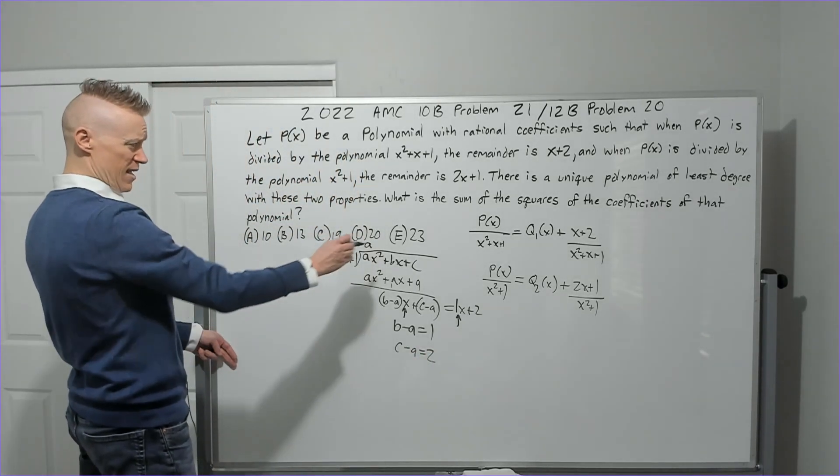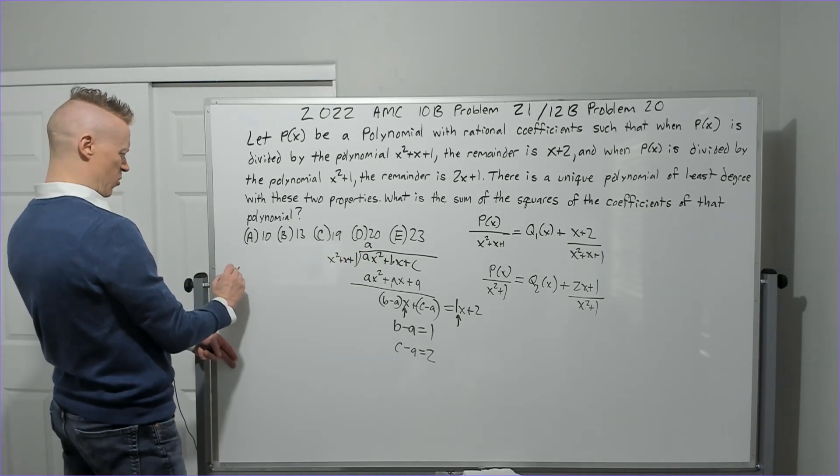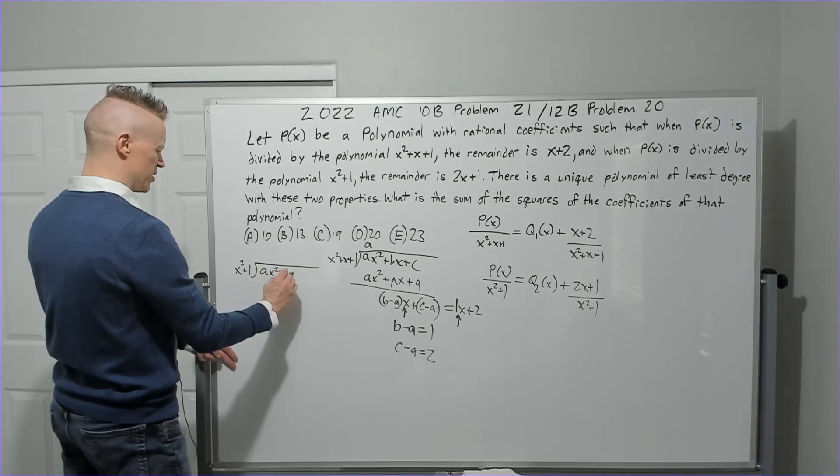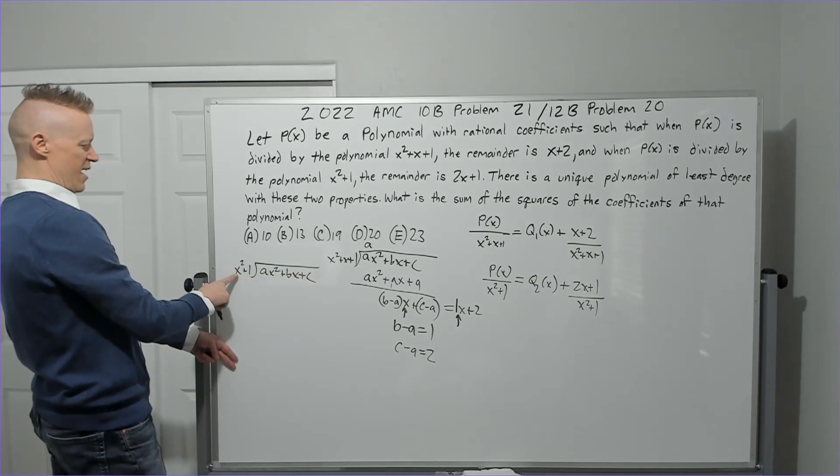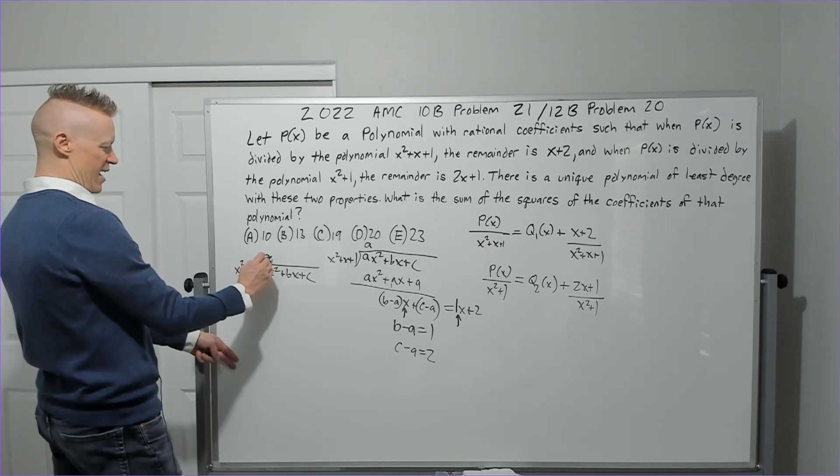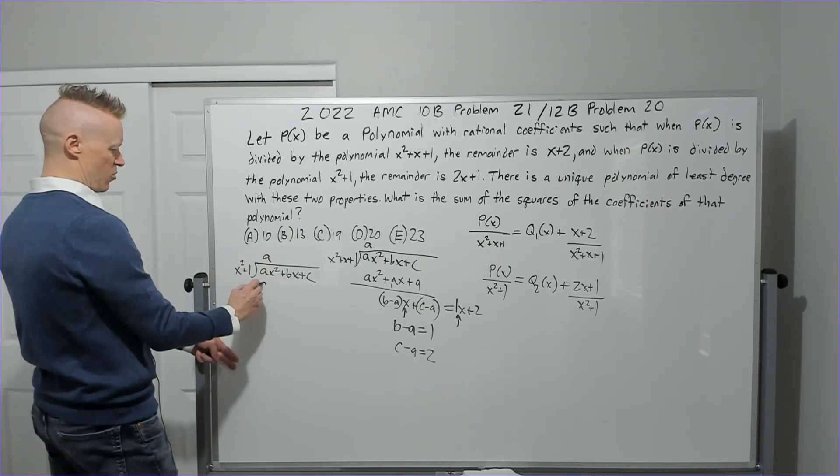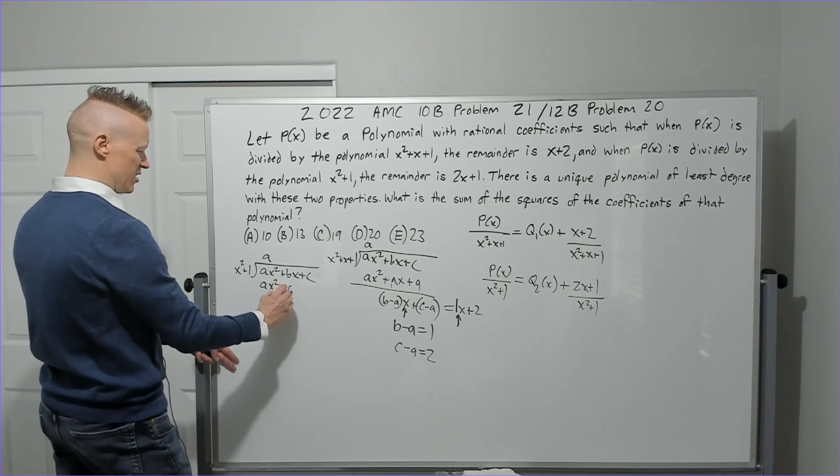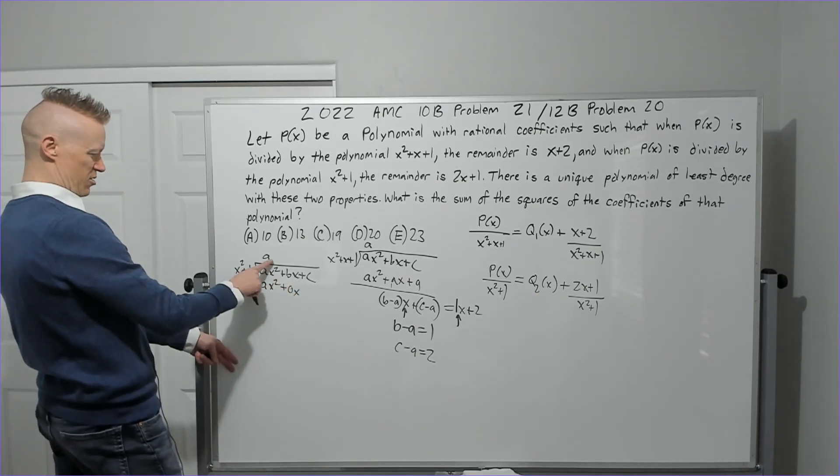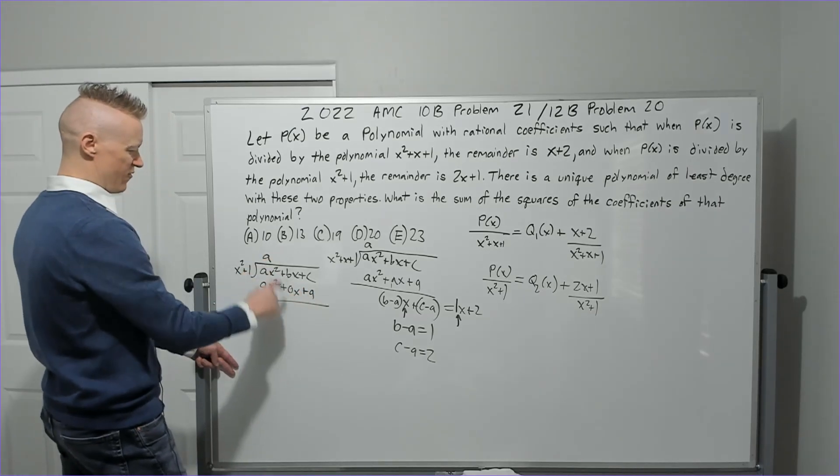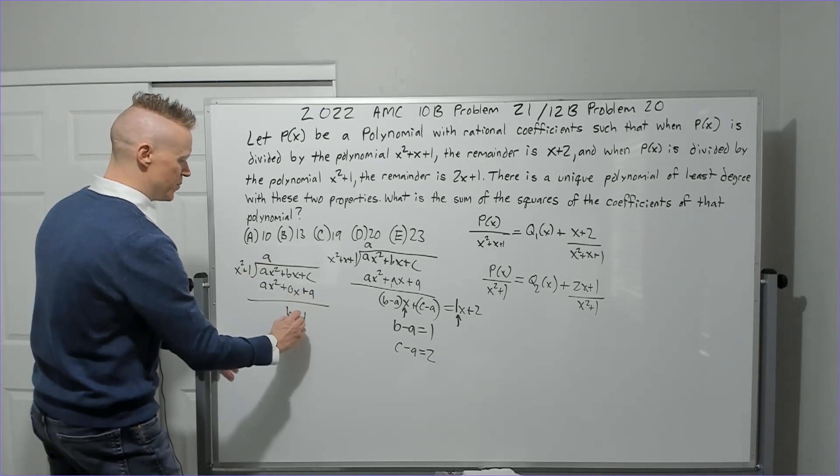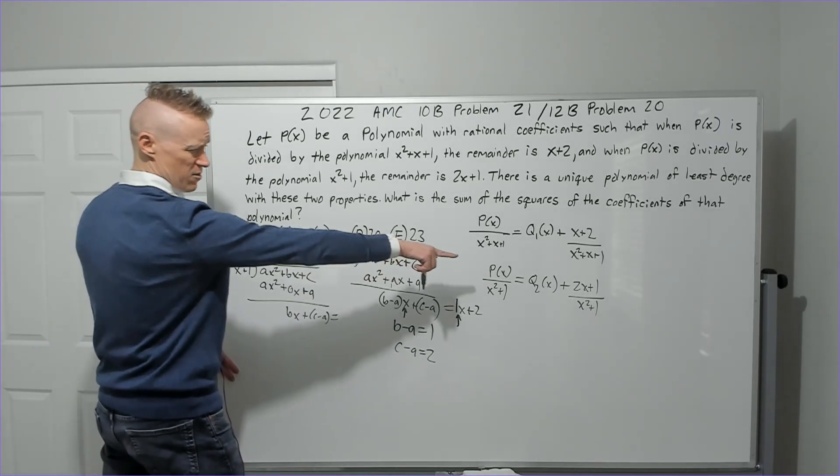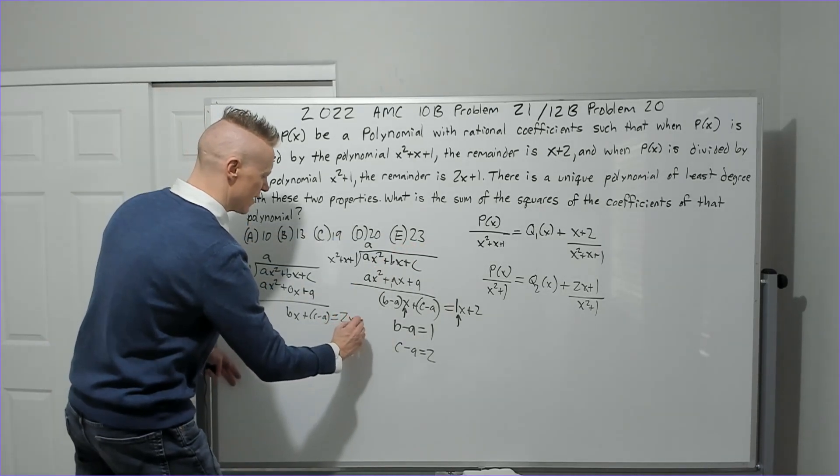Let's go ahead and do the other one. If I do it with x squared plus one, and we again have ax squared plus bx plus c, x squared times blank is a. A times x squared is ax squared plus zero x, because there's no linear term, a times one is a. If I subtract, you're going to get bx plus c minus a.